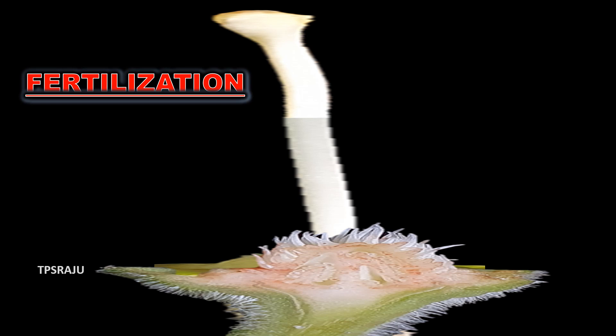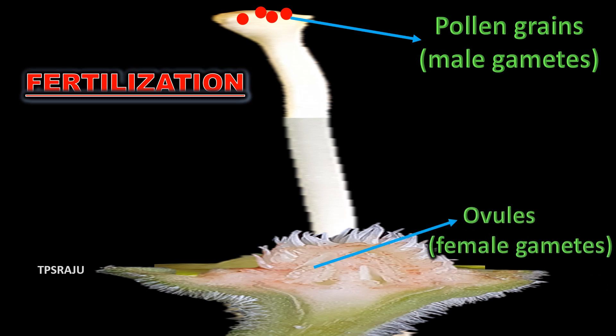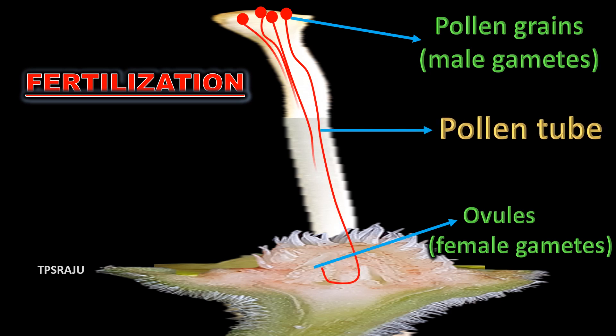Let us observe the process of fertilization. Due to pollination, pollen grains reach the stigma of the pistil. Ovules are already produced in the ovary of the pistil. Then how can they fuse with each other? Pollen grains germinate to form pollen tubes. These tubes grow through the style and reach the ovules present in the ovary.